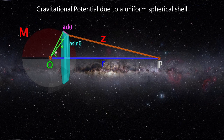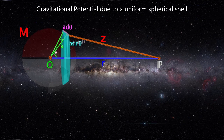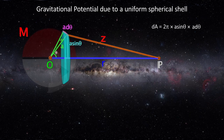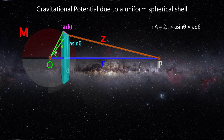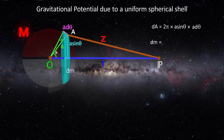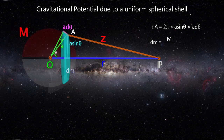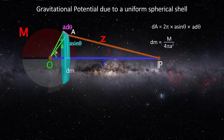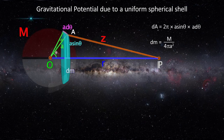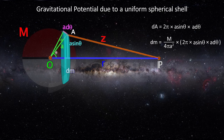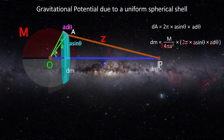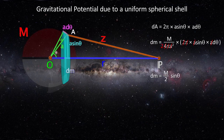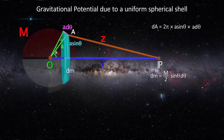The area of the ring element is the product of its circumference and thickness. The mass of this elemental ring is the mass of the shell divided by its surface area, multiplied by the surface area of the ring element. Therefore, dm equals m by 2 times sin theta d theta.